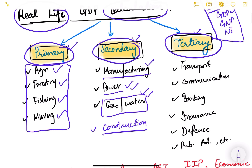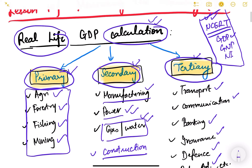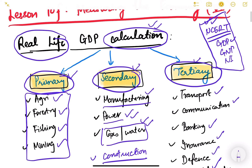In the tertiary sector, we see all different kinds of services like transportation, communication, banking, insurance, defense, public administration, etc. These are the three different sectors and we have to look at all three in order to estimate the total GDP of the economy, because our economy consists of these three sectors.